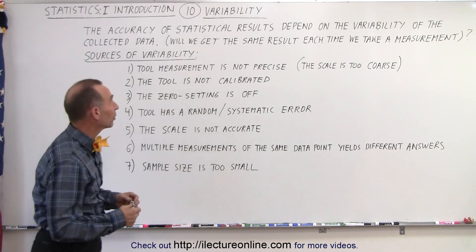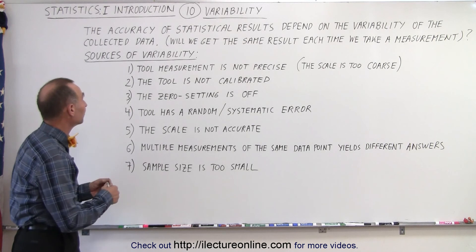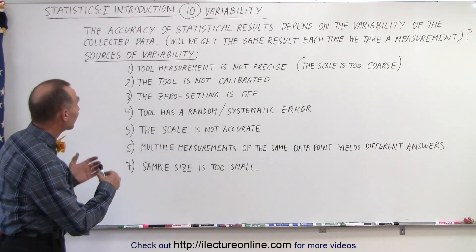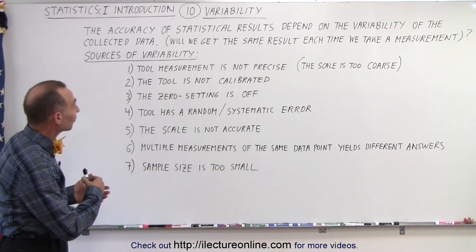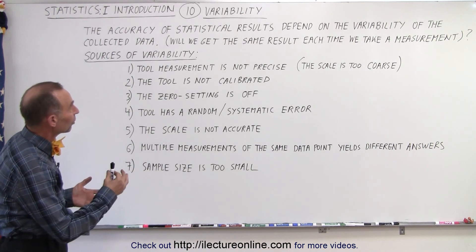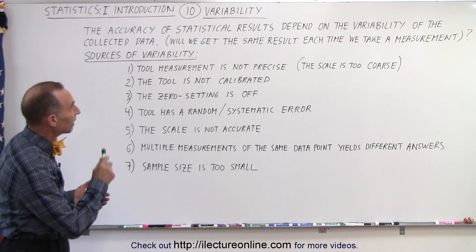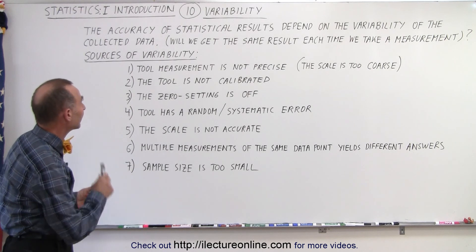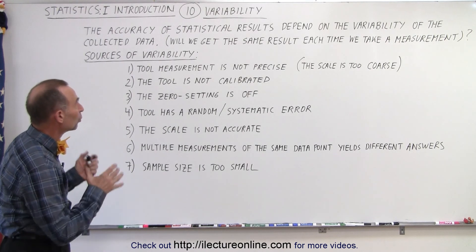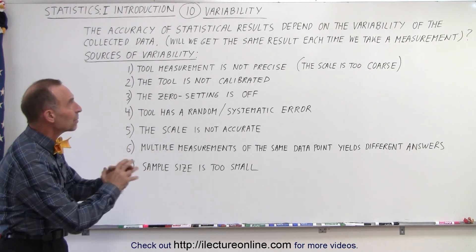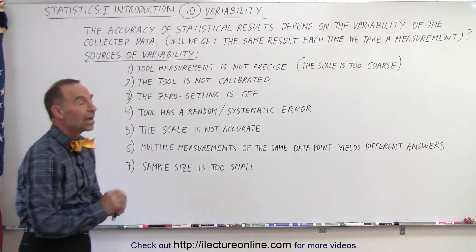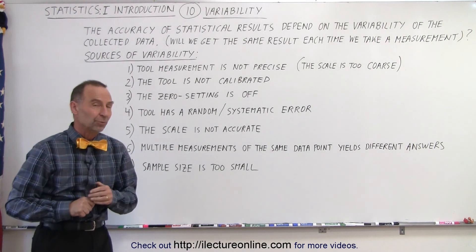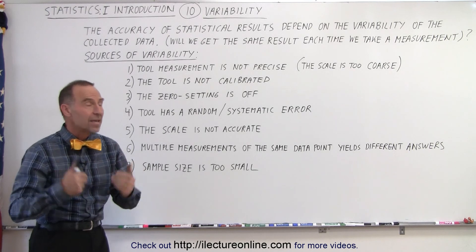So let's take a look at the definition. It is the accuracy of statistical results that depends on the variability of the collected data. Will we get the same result each time we take a measurement? And that's the key.